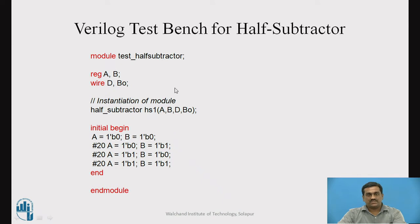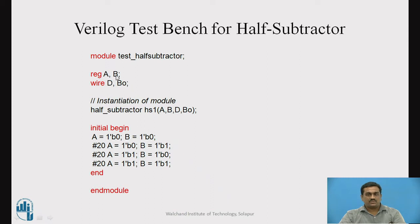This shows the testbench for the half subtractor circuit. The inputs are declared using the reg data type, and the outputs are defined using the wire data type — reg because we want to store values at the inputs. The next line shows the instantiation of the half subtractor module: half_subtractor HS1 is the name of the object, and the required arguments are passed inside the brackets. Between initial, begin and end, we provide all possible input combinations to test the correctness of our module.